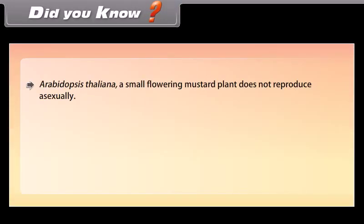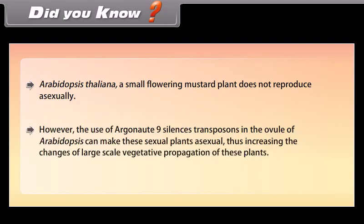Did you know? Arabidopsis thaliana, a small flowering mustard plant, does not reproduce asexually. However, the use of Ergonaut 9 Silensis transposons in the ovule of Arabidopsis can make these sexual plants asexual, thus increasing the chances of large-scale vegetative propagation of these plants.